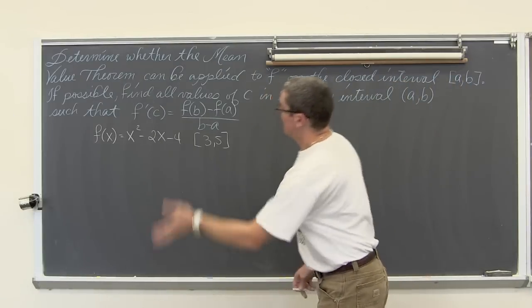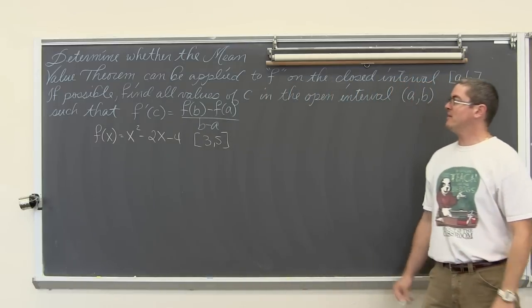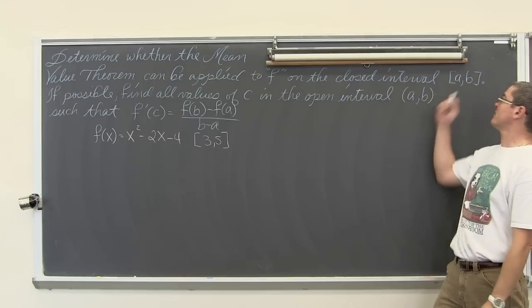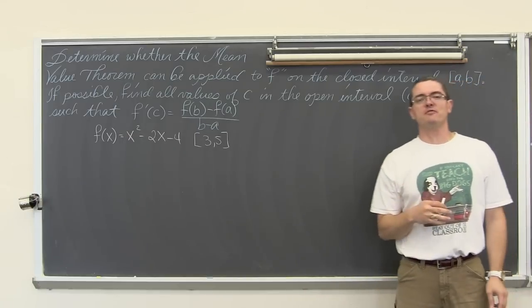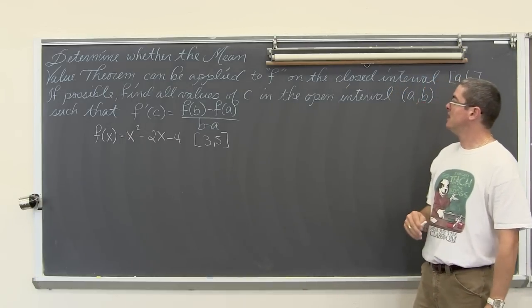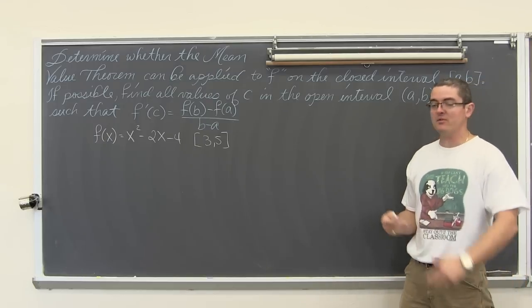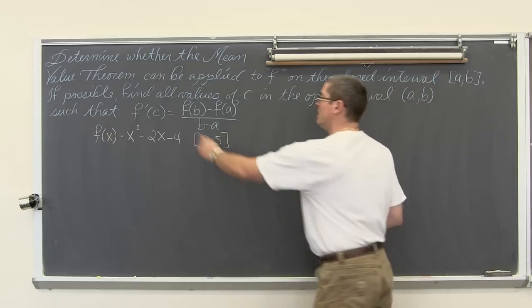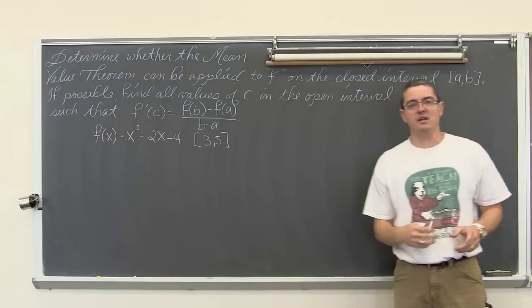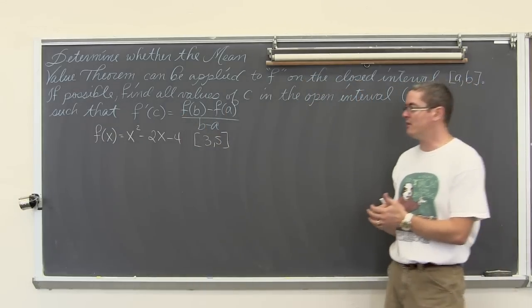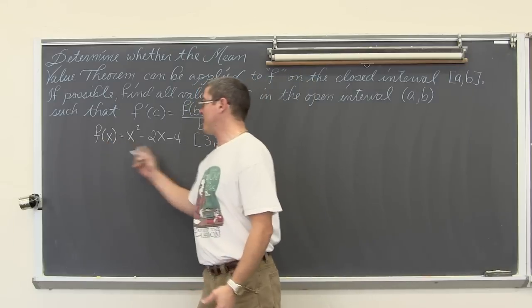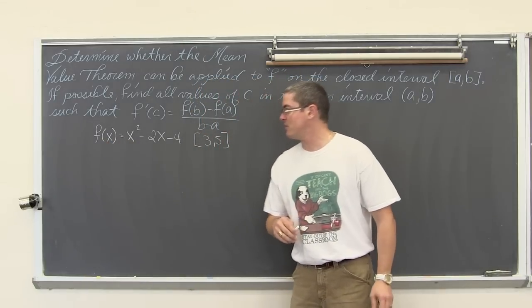So here we have our first example. Determine whether the mean value theorem can be applied to the function on the closed interval [a,b], and if possible find all values of c in the open interval (a,b), such that f'(c), or the instantaneous rate of change, is equal to the average rate of change. So let's go ahead and find the derivative. If this is f(x) = x² - 2x - 4.